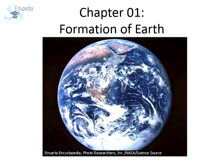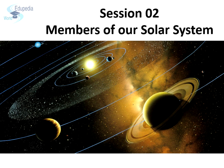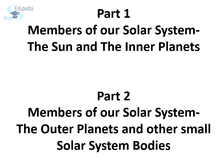In this session, we will learn about the members of our solar system. This session has been divided into two parts. In this part, we will cover our Sun and the first four planets, while in the second part we will cover the outer planets and other small solar system bodies.